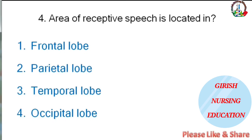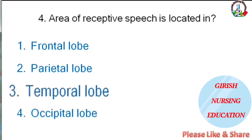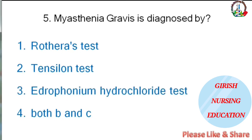The area of receptive speech is located in — frontal lobe, parietal lobe, temporal lobe, or occipital lobe. The correct answer is temporal lobe.